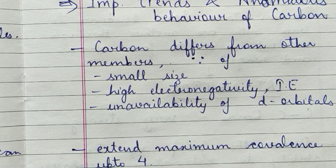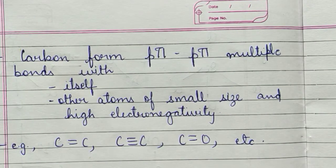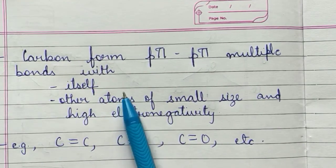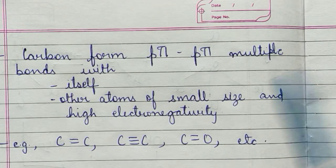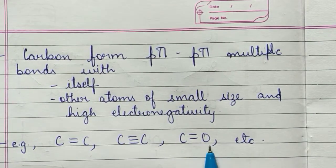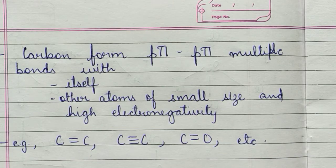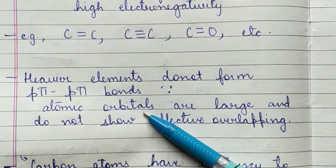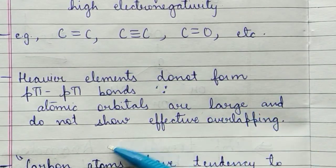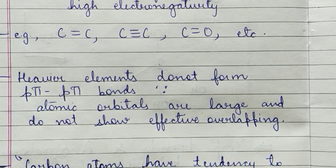Carbon cannot extend its covalency beyond four because it has no d-orbitals. Carbon forms p-pi p-pi multiple bonds very effectively — both with other carbon atoms and with small, electronegative atoms. For example: C=C, C≡C, C=O, and C≡N. However, heavier elements cannot form such effective p-pi p-pi bonds because their larger atomic orbitals result in less effective orbital overlap, making these bonds much weaker.